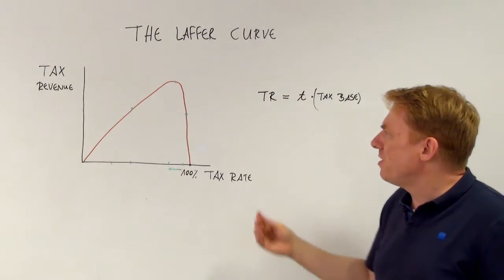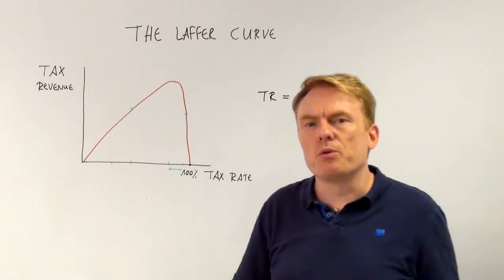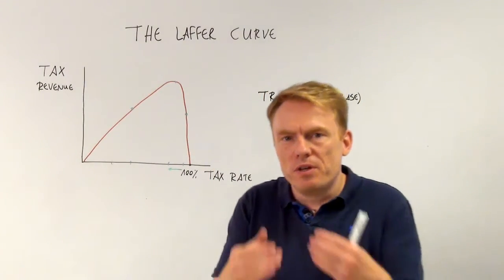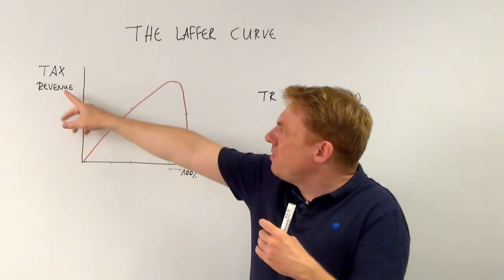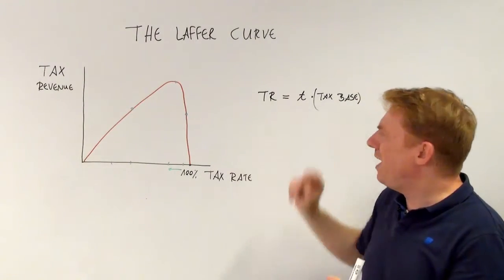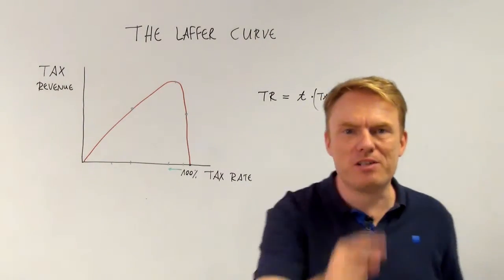So that was somehow two problems caused by Laffer curve. That's the concept of Laffer curve, which means a two-sided relationship between tax revenue and tax rate. Thank you for watching.